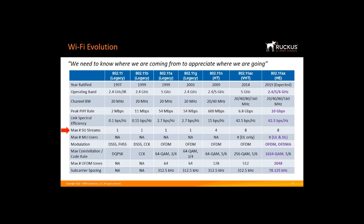Another metric was the maximum number of single-user streams. The original standard had one transmit chain and one receive chain that allowed us to transmit one stream of data. Then 11n came along with four radio chains — now we could transmit four parallel streams to the same device, which improved throughput and efficiency. 11ac allowed as many as eight streams, requiring APs and clients with eight radio chains. However, clients are small and battery operated, and Wi-Fi manufacturers don't build eight-chain clients. Clients usually have only one or two chains.